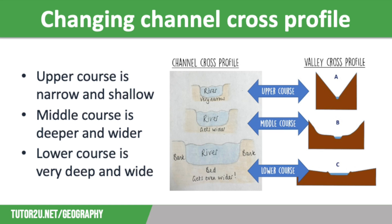As the river flows downstream, the gradient becomes less steep, meaning that there is less vertical erosion. Instead, there's lots of lateral erosion. This sideways erosion eats away at the riverbanks, making the channel wider.